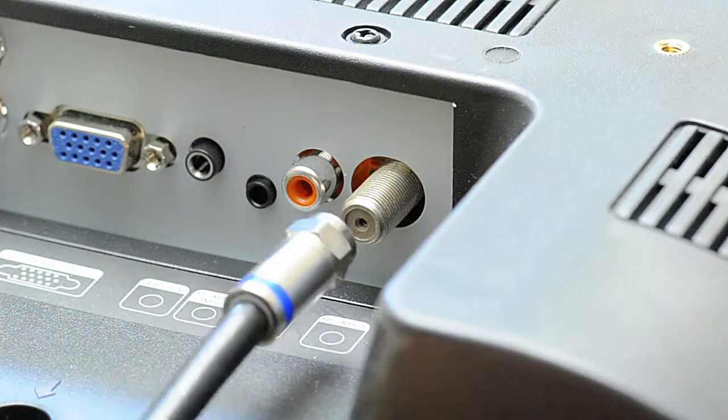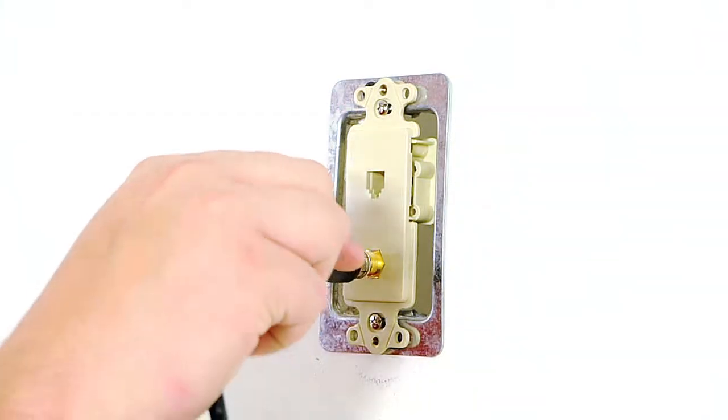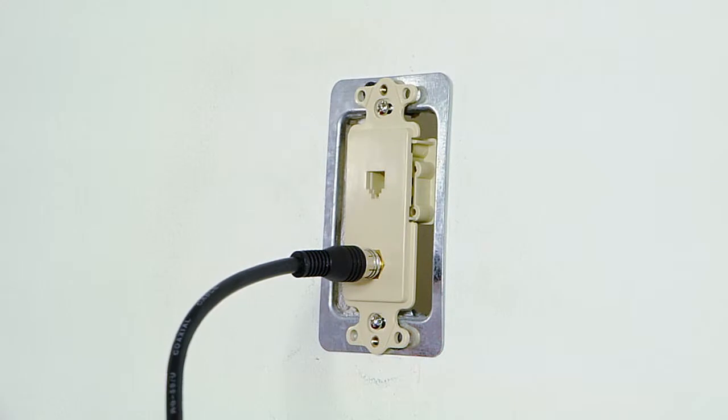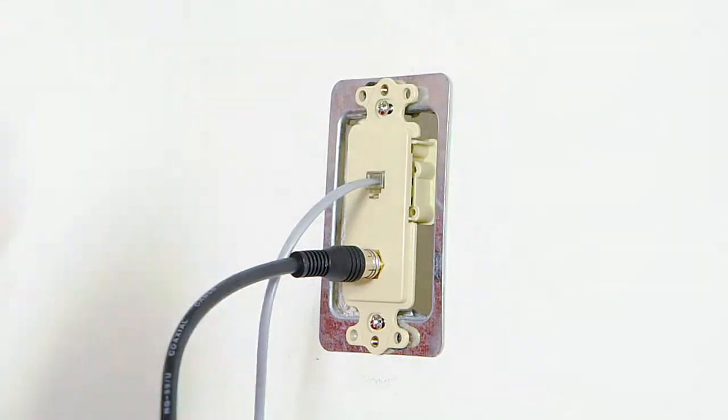Over time, repeated use can cause the cable to fail at the connector. By terminating the end wall cable at a wall plate, you reduce strain on the cable and it allows you to easily replace failed cables.